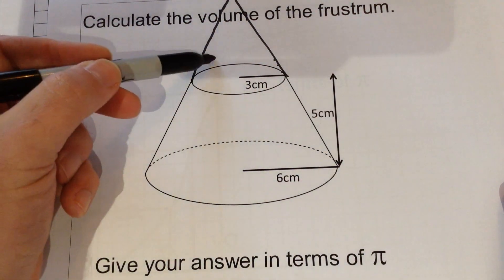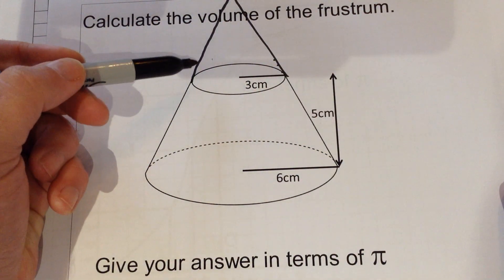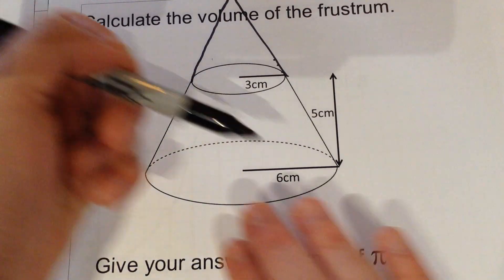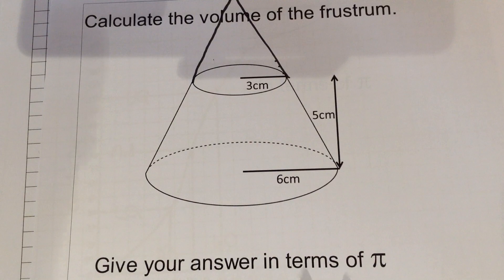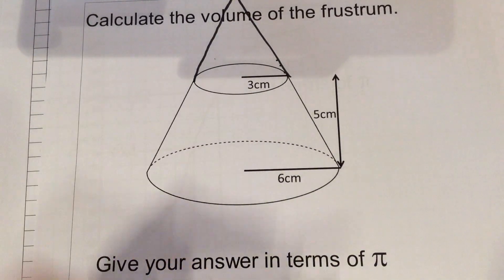Therefore, because the radius of this is 6 and the radius of this small cone here is 3, it simply means that the cone at the top, all the lengths on it, are half as big as the length of the big cone. This doesn't work for area either, so just be very careful. It is only the length that is half.